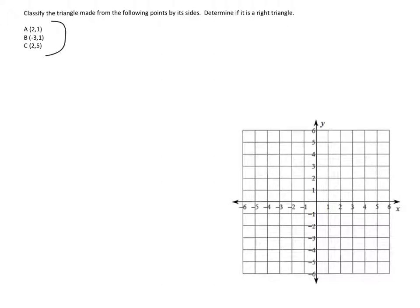If we look here, we're given three points that make up a triangle. We'll start by just sketching them. So 2, 1 is here, and negative 3, 1 is here, and 2, 5 is here. So these three points make up a triangle.